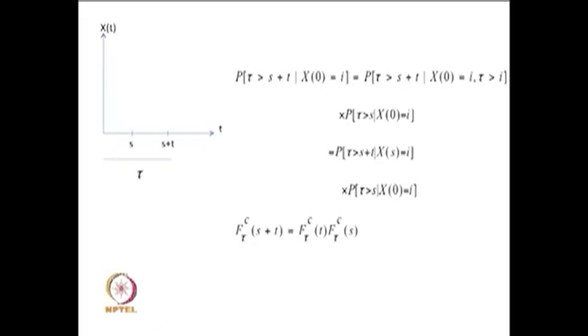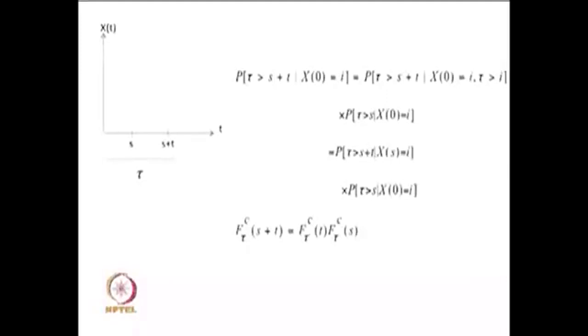Let me draw a simple graph. This is the t-axis and this is X(t). Suppose the system was in state i at time 0, after some time it moved into some other state. At time point s it was in state i, and at time point t it moved into some other state. So τ here is the time spent in state i from here to here — that is a random variable.